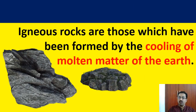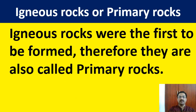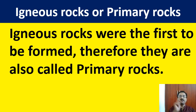Over a period of time, the lava became cool and solid, turning into rock — this is called igneous rock. Igneous rocks are those which have been formed by the cooling of molten matter of the earth. Igneous rocks are also called primary rocks because they were the first to be formed — when volcanic eruption happens, the lava cools and solidifies, so they are called primary rocks.